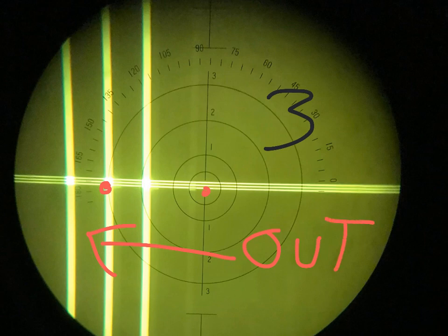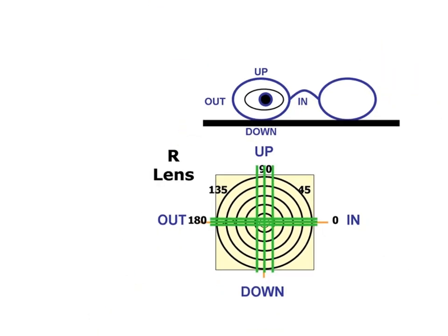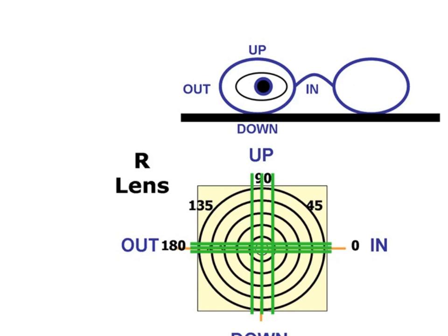Let me show you a picture of prism orientation. This is the right lens. If the target moves this way, then it's out. If it moves this way, then it's in. If it moves this way, then it's up, and if it moves this way, then it's down.